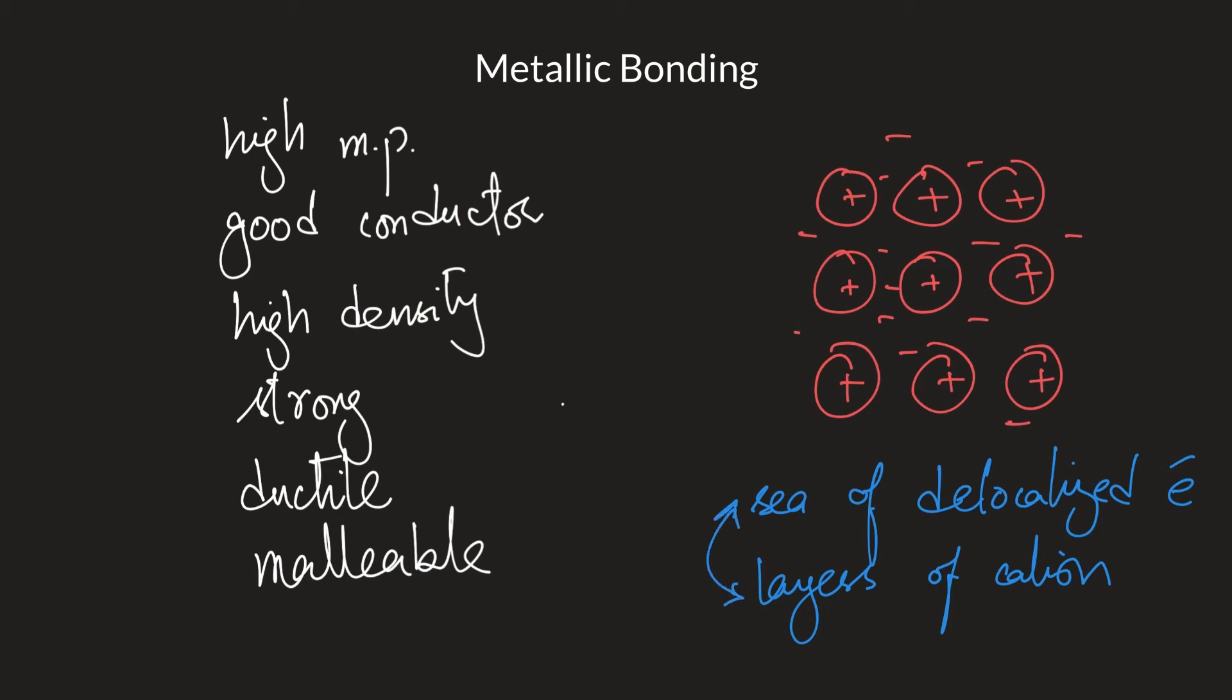And they have attraction to each other. And this force of attraction is called metallic bond. So if somebody were to ask you what metallic bond is, it's basically the force of attraction between sea of delocalized electrons, which are mobile electrons. They're moving around and they're negative. And the layers of cations, which are positive. So positive attracts negative.